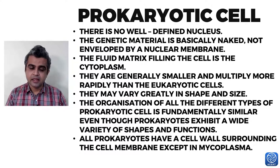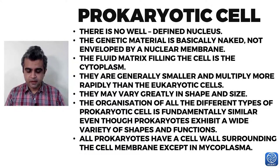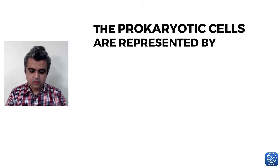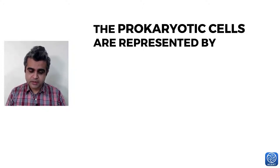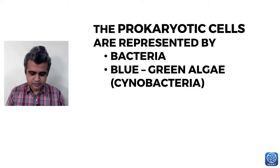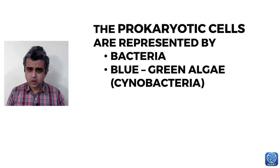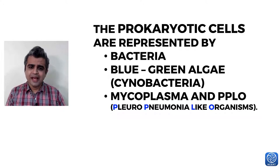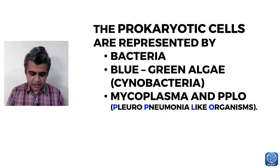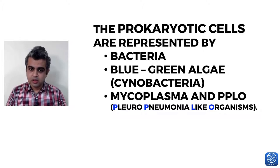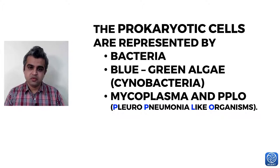Prokaryotic cells are generally found in three main groups: bacteria, blue-green algae (also called cyanobacteria), and mycoplasma, also called PPLO — pleuro pneumonia-like organisms.